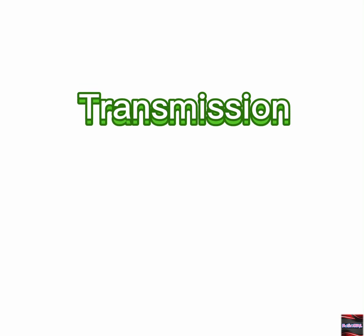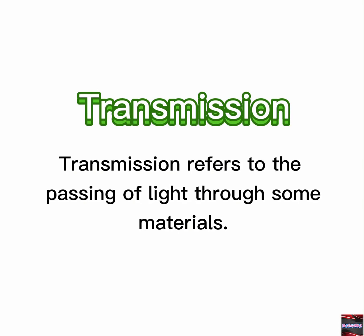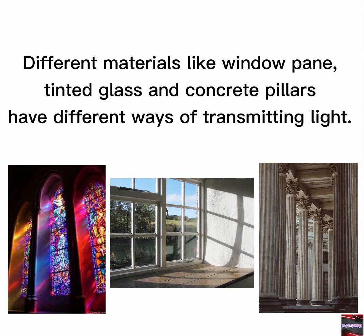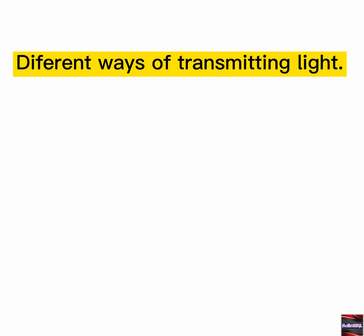Transmission. Transmission refers to the passing of light through some materials. For example, when light passes through a glass window, it is transmitted to the other side, allowing the light to pass through the window. Different materials, like window pane, tinted glass, and concrete pillars, have different ways of transmitting light.